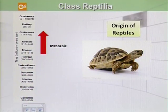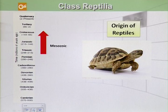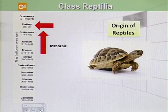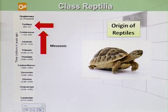Reptiles flourished during the Mesozoic era, which is the era of the Triassic, Jurassic, and Cretaceous periods. The climate that had been favorable for reptiles became less favorable in the Tertiary period, and so most of them became extinct. The present-day reptiles represent 4 out of the 12 orders that lived in the past.